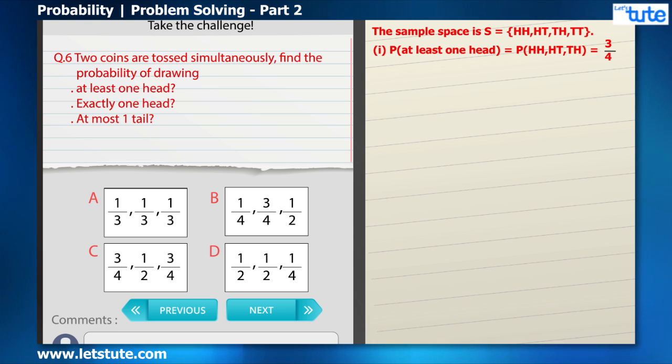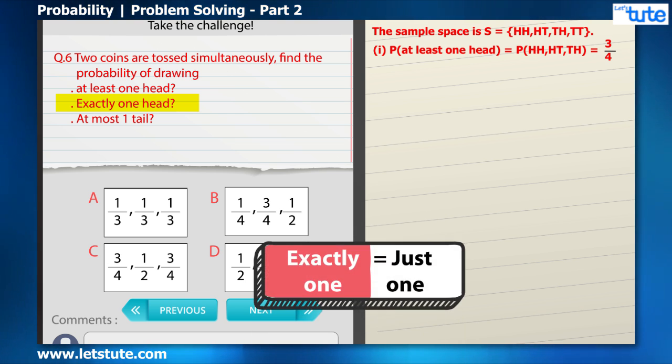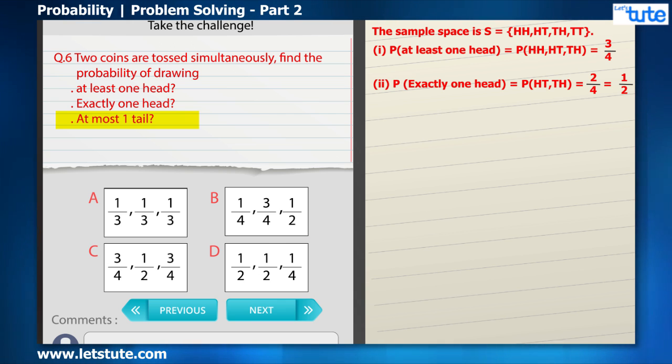The next question is we need to find exactly one head. Now when the question asks for exactly one, we have to make sure that the number is neither greater nor lesser—it should be exactly just one. So from our sample space, we will choose HT and TH only, which comes to 2 by 4, which comes to 1 by 2.